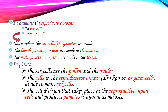In humans, the reproductive organs are the ovaries and the testes. The testes and ovaries are the reproductive organs — they are not reproductive cells. The ovaries are for females and the testes are for males.